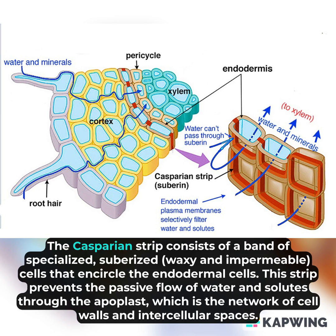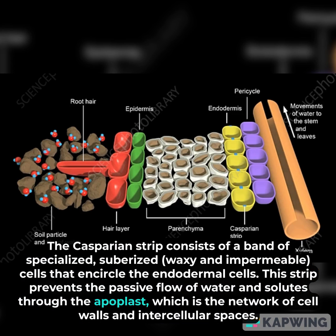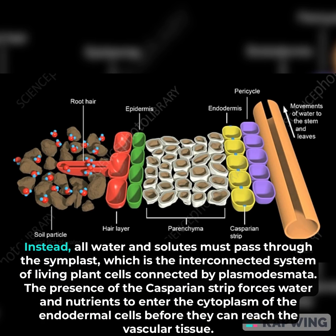The Casparian strip consists of a band of specialized, suberized, waxy and impermeable cells that encircle the endodermal cells. This strip prevents the passive flow of water and solutes through the apoplast, which is the network of cell walls and intercellular spaces.